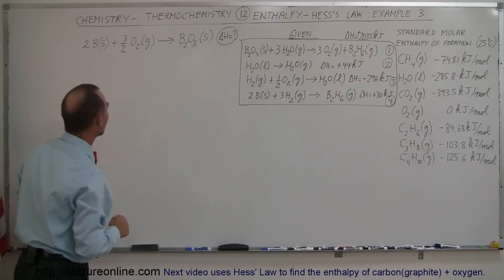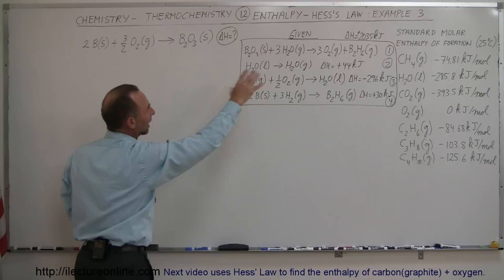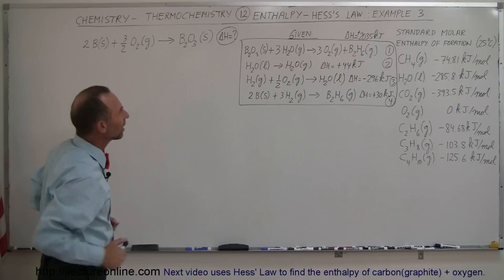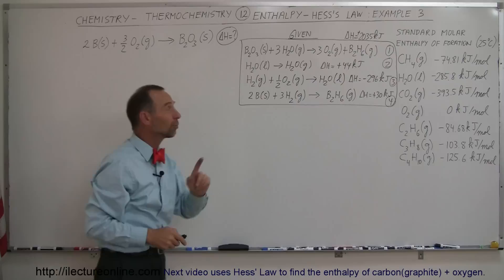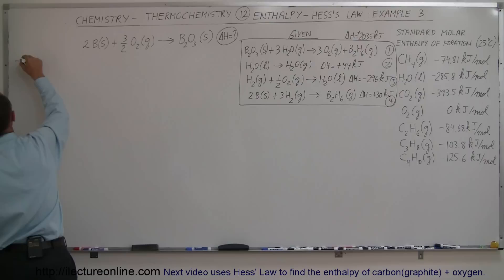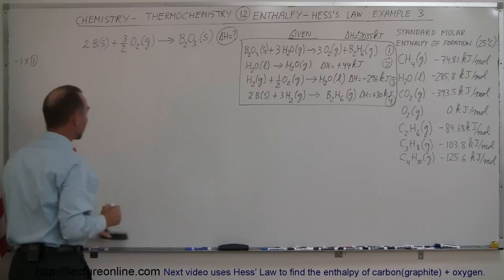Notice that we have boron on the left side and boron trioxide on the right side. Rummaging through the reference equations, notice our first equation has boron trioxide on the left side. So if we turn this equation around, we have it on the right side, which is where we want it. So I'm going to start by taking the first equation and turning it around — multiplying times negative one. So it's negative one times equation number one.